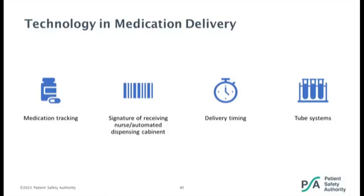A signature of the receiving nurse or the automated dispensing cabinet is needed for dispensing patient medications. There are good amounts of short-stability medications that have to be delivered right away. For example, meropenem has about a one-hour stability, so the technician can make it within a couple minutes of it being due, run it out or tube it quickly to the floor, and the nurse is notified that this is a medication that needs to be given right now because of its stability.